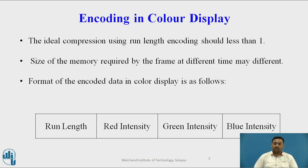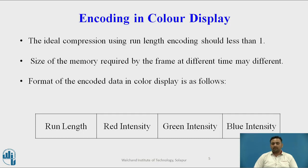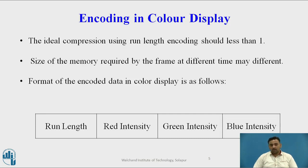The ideal compression ratio of run length encoding should be less than 1, meaning after compression the size must be reduced. The ratio between the non-compressed image and the compressed one should be less than 1 — the size should be reduced after compression, otherwise the encoding will not be considered correct. The size of memory required to display that image may vary according to different frames and different images on those frames.